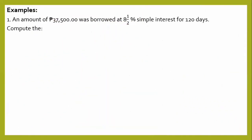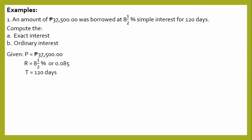Example number one: An amount of 37,500 pesos was borrowed at 8.5% simple interest for 120 days. Compute A, the exact interest, and B, the ordinary interest. The given values are: P is equal to 37,500; R is equal to 8.5% or 0.085; and the given time is 120 days.